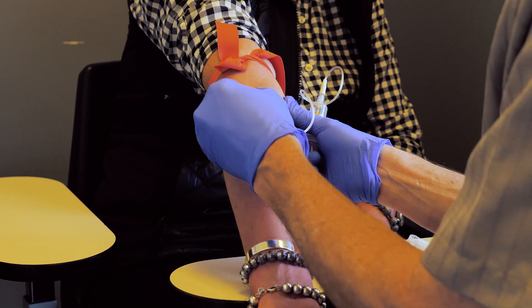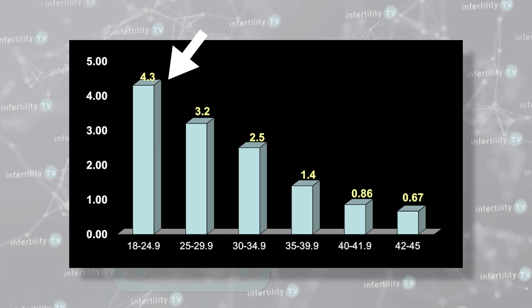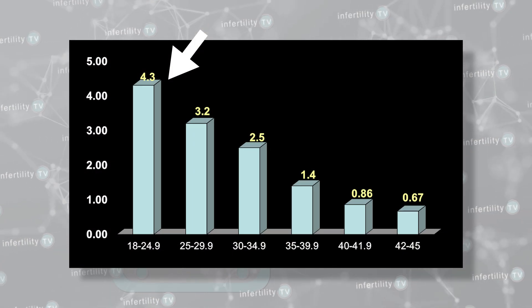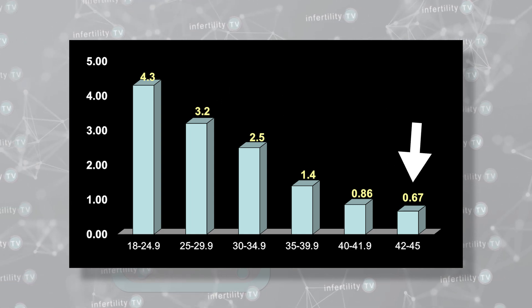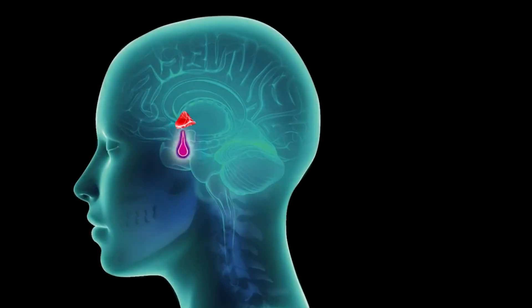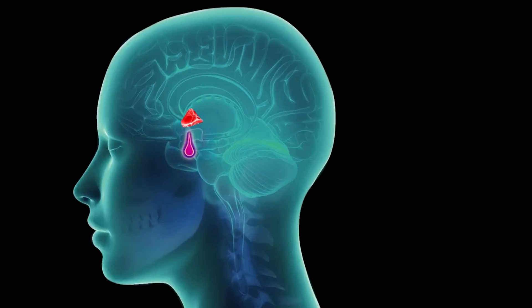The number of eggs remaining in the ovaries is referred to as ovarian reserve. Fertility doctors try to measure ovarian reserve in a number of different ways. First, there are blood tests. AMH, which comes from the ovaries, is higher when there is a healthy reserve of eggs and decreases as the reserve declines. FSH, which comes from the pituitary gland, is the opposite of AMH — low levels are seen in people with good ovarian reserve and high levels occur when reserve is poor.